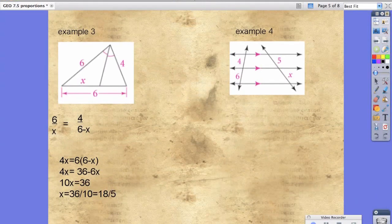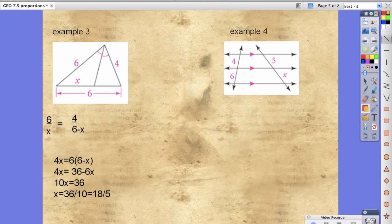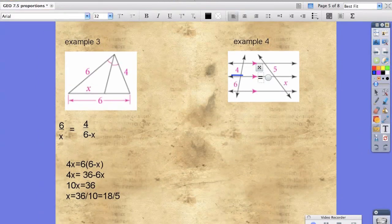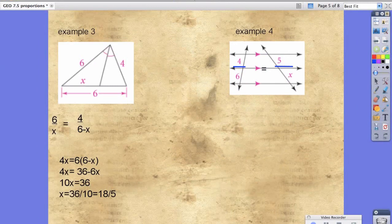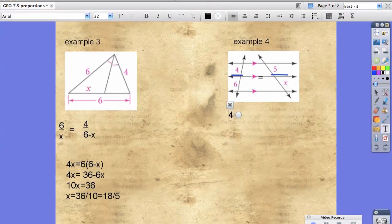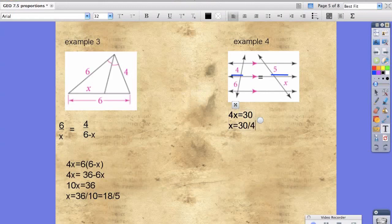Example 4 should be pretty easy at this point. It is 4 divided by 6 equals 5 divided by x. Take the cross product, we get 4x equals 30, x equals 30 fourths, which is the same thing as 15 halves.